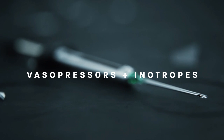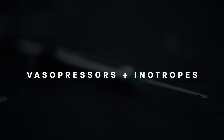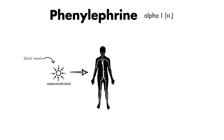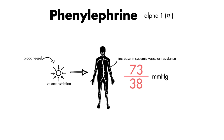Phenylephrine is a pure alpha-adrenergic agonist. This means it will have its effects mainly by causing vasoconstriction of our blood vessels. Because of this vasoconstriction, you will see an increase in systemic vascular resistance, and as a result, increases in systemic blood pressure.